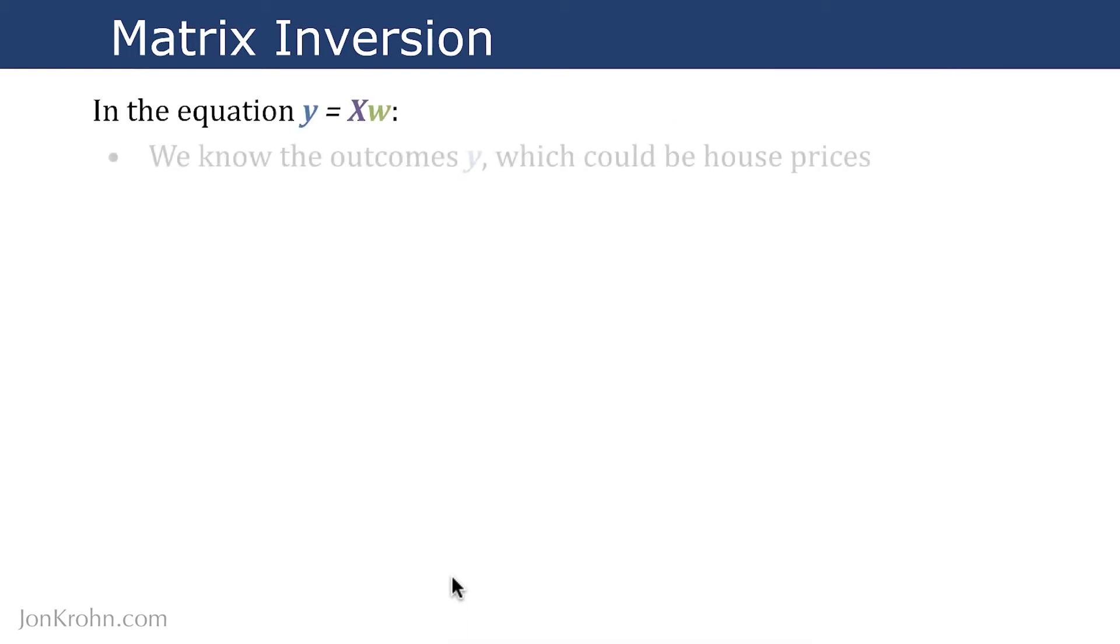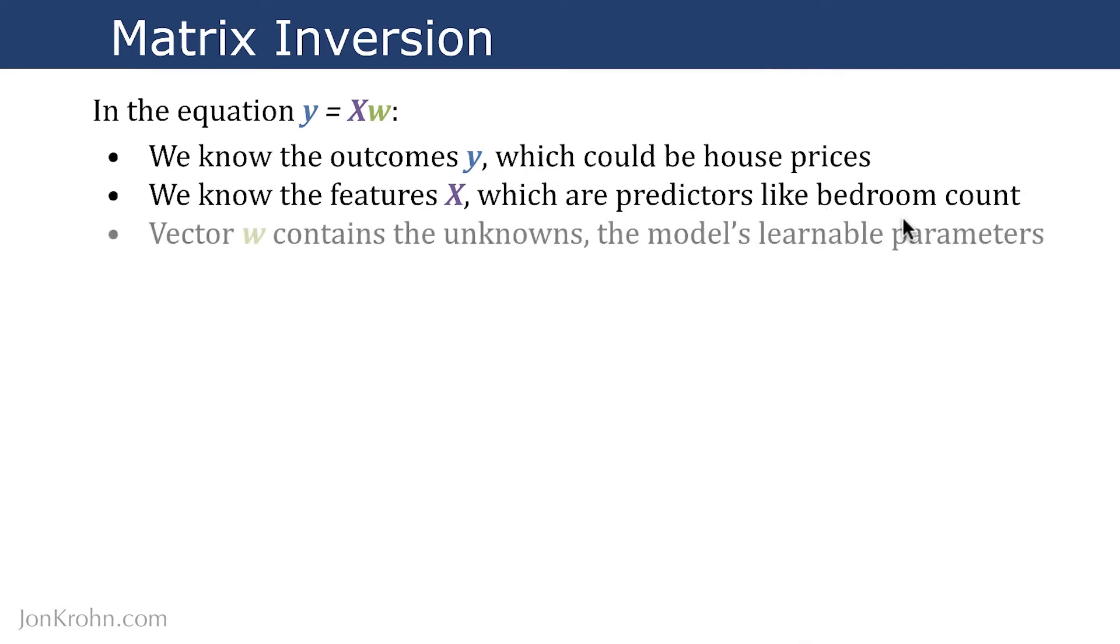So in that equation, we know the outcomes y, which could be house prices in the example I've been giving. We know the features x, which are predictors of house price, like bedroom count. And vector w contains the unknowns, the model's learnable parameters.